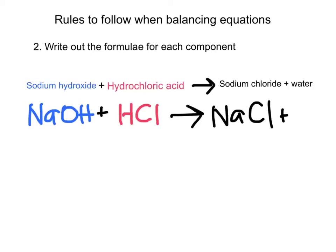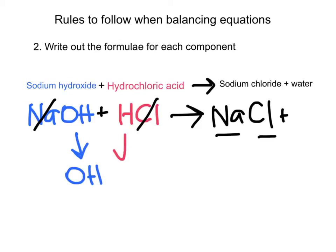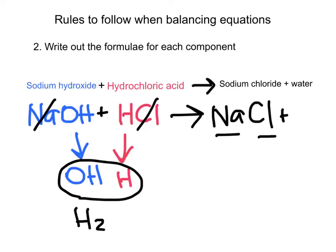Now let's think about what else is formed in this equation. We've said water is being generated, but where does it come from? Sodium has been formed on the other side of the equation — cross that out. Chloride is there too — cross that out. That leaves a hydroxide on one side and a hydrogen ion on the other. Put those together and you get H2O — that is where the water actually comes from.